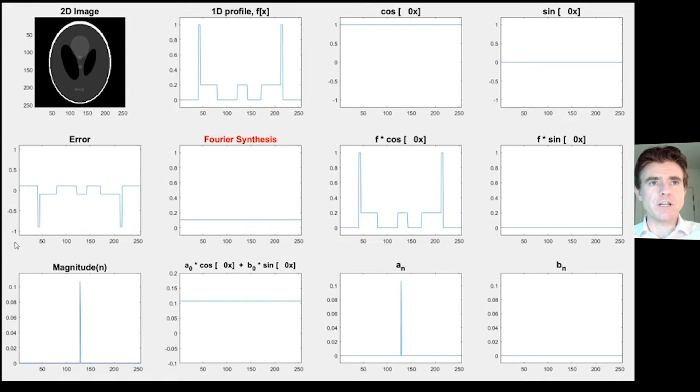You have to watch out for the scaling, but you can see I'm quite a way off. I've got notable error. Particularly these two peaks are completely absent from that Fourier synthesis. In the bottom left box here, I'm showing the magnitude of the a_n and b_n coefficients, so we can look at them in combination. Let's move on to the next frequency.